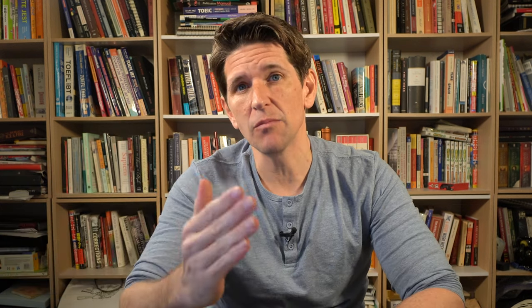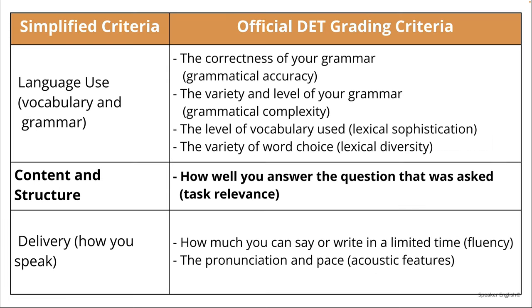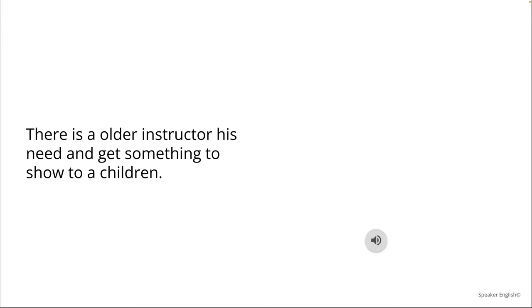Let's start by looking at an example of a student who doesn't have a template. He's going to answer a question for this photo. He has 20 seconds to prepare and can't write down any notes, so he's just got to speak from what comes into his mind. Because he doesn't have a plan, he doesn't have good structure, and that's one of the grading criteria for the Duolingo English test — content and structure. So that's going to be a problem for him.